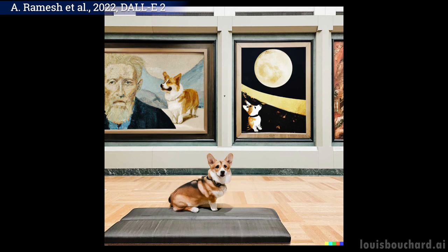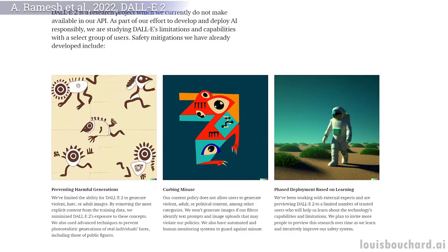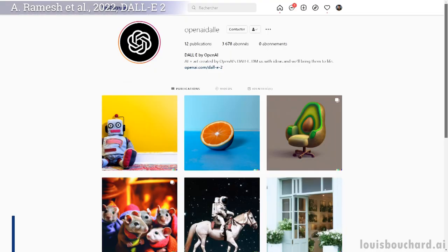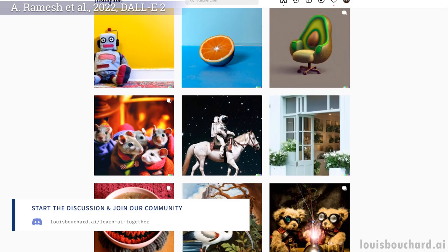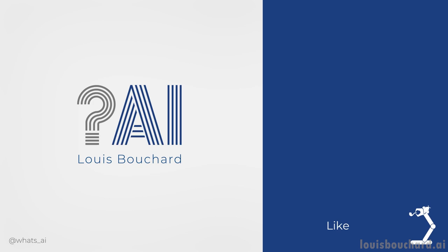Unfortunately, the code isn't publicly available and is not in their API yet. The reason for that, as per OpenAI, is to study the risks and limitations of such a powerful model. They actually discuss these potential risks and the reason for this in their paper and in a repository linked in the description below. They also opened an Instagram account to share more results, linked below as well. I loved DALL-E and this one is even cooler. This was just an overview of how DALL-E 2 works and I strongly invite you to read their paper linked below for more detail on their implementation. I hope you enjoyed this video as much as I enjoyed making it, and I will see you next week with another amazing paper. Thank you for watching!